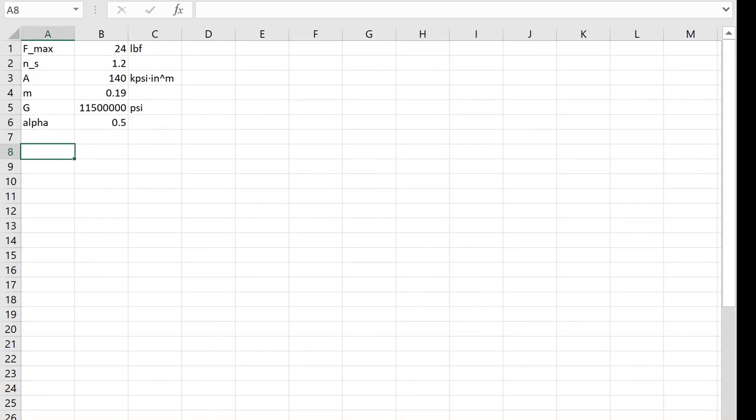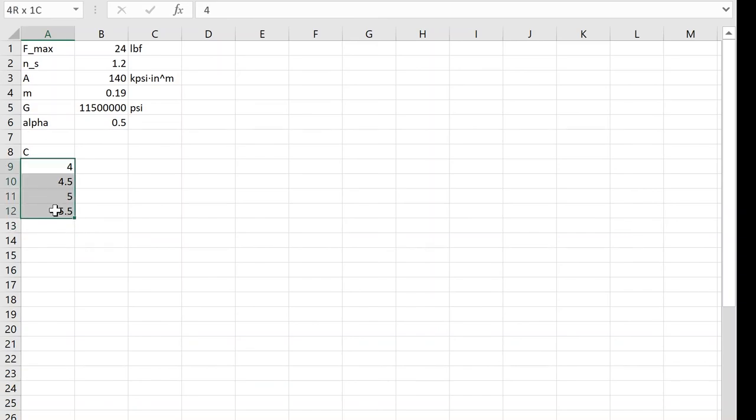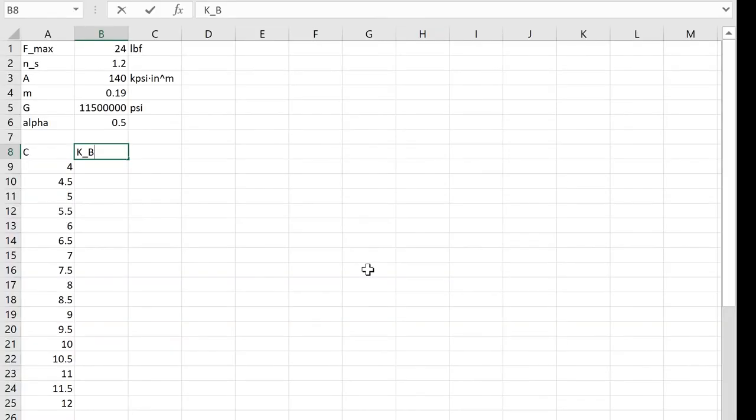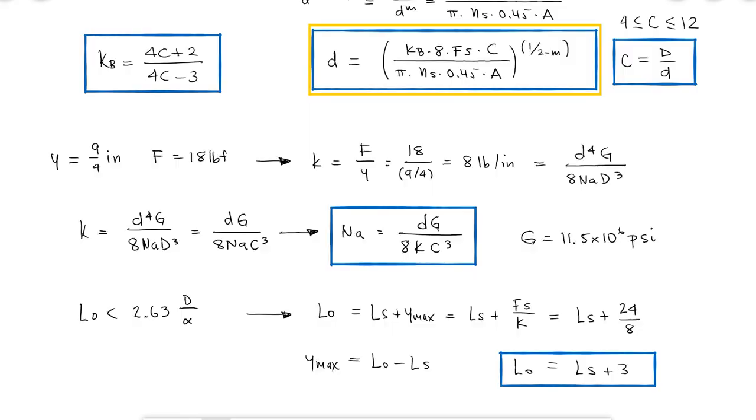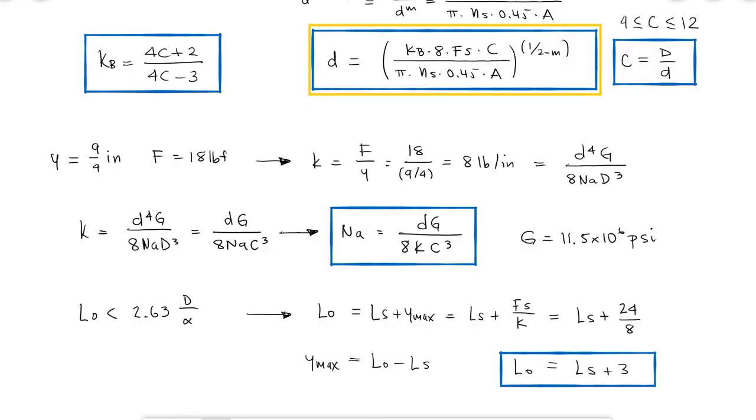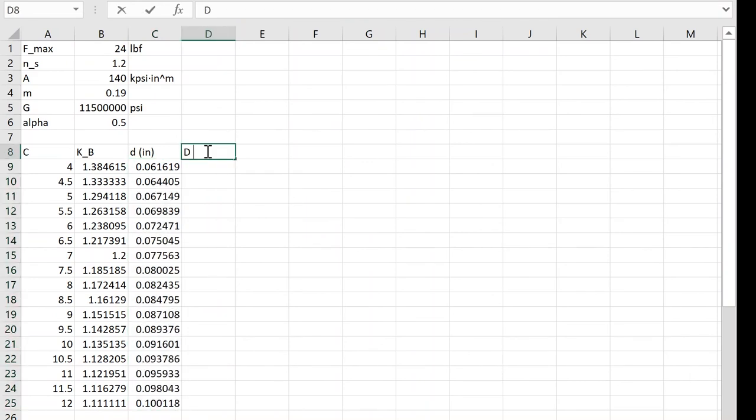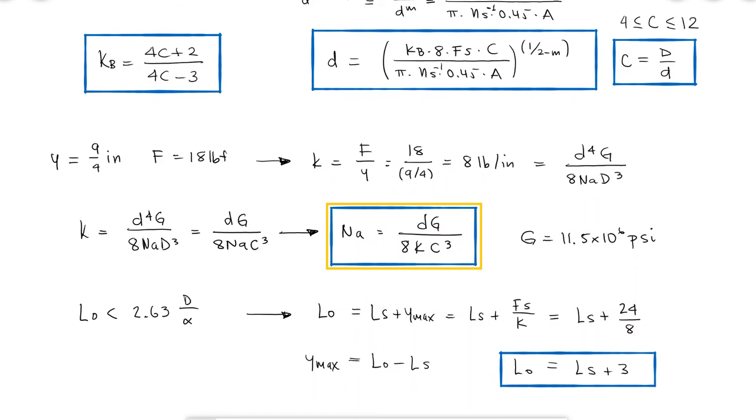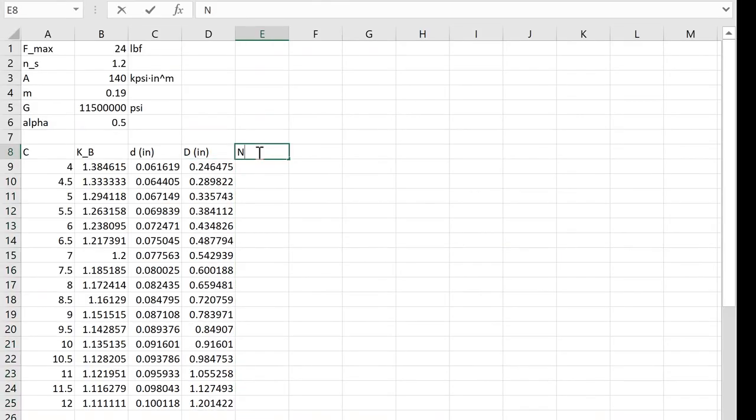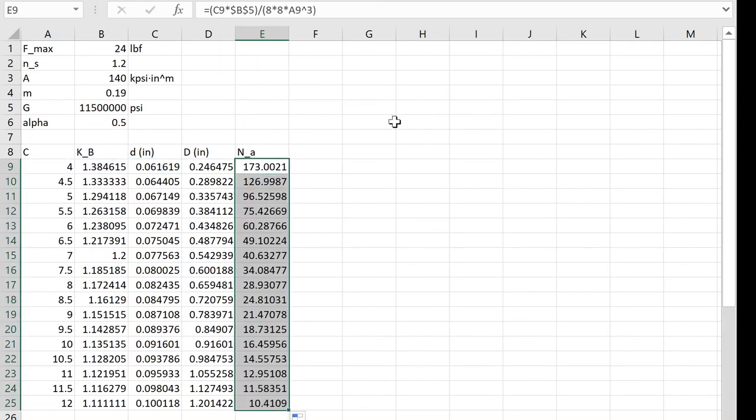I know that the recommended values for the spring index are those between 4 and 12. I know that the Kb value is dependent on that spring index value. With the expression I found for the wire diameter and all of the properties and parameters I already looked up, I can find a corresponding wire diameter for every C that I'm testing. The coil diameter would be the spring index times the wire diameter, and with the wire diameter, the shear modulus, the spring index, and the spring constant of 8 pounds per inch, I could calculate the number of active coils for each one of the values of C.